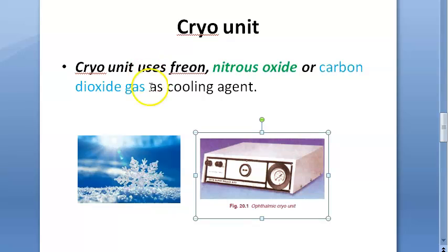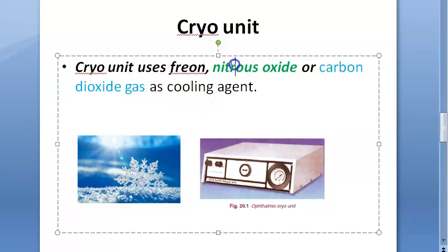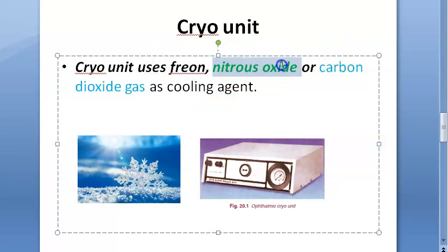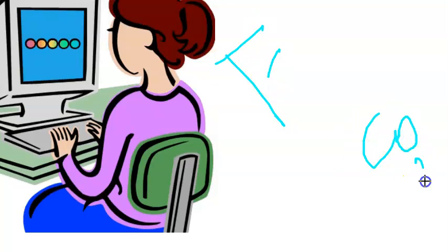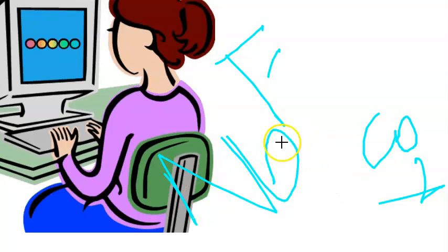The cryo unit uses three gases as cooling agents: Freon, nitrous oxide, and carbon dioxide.